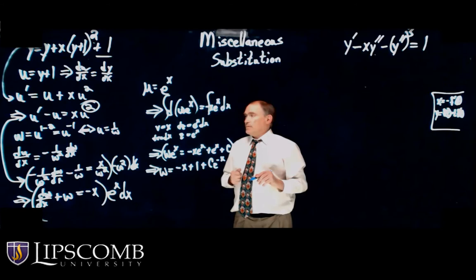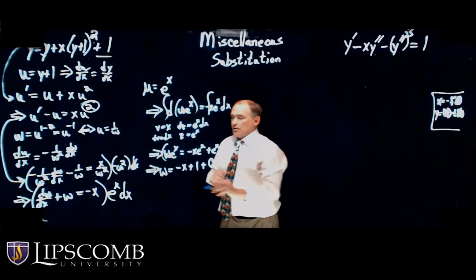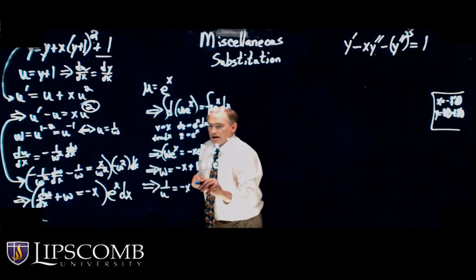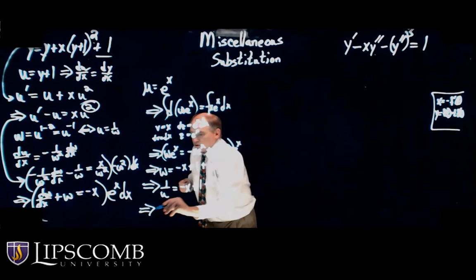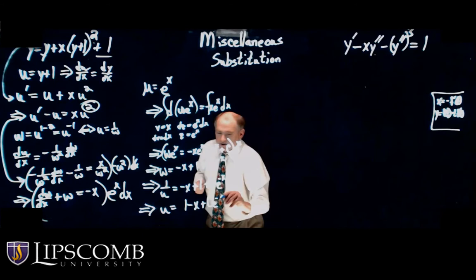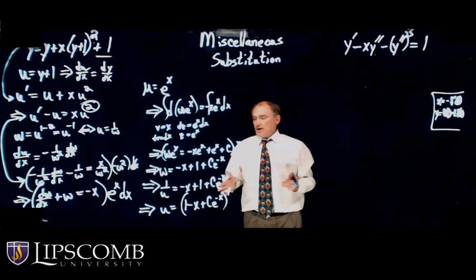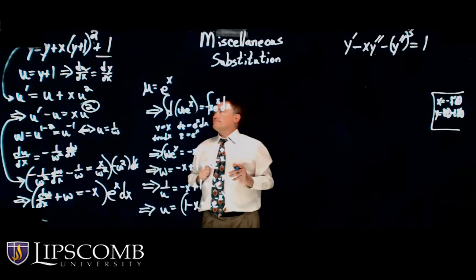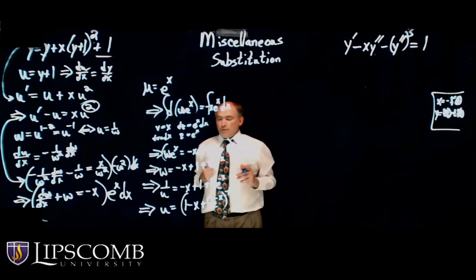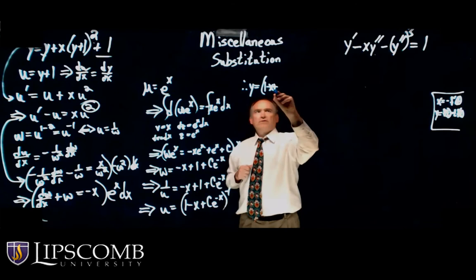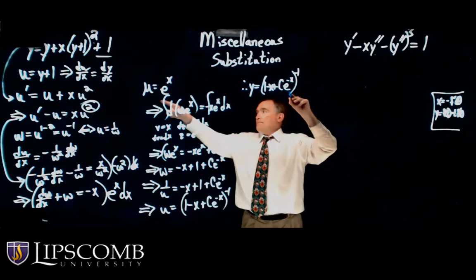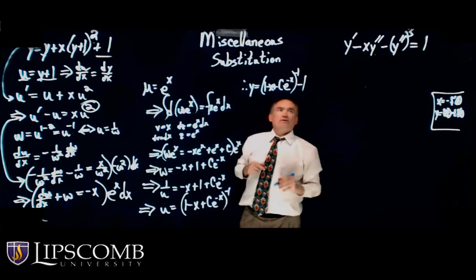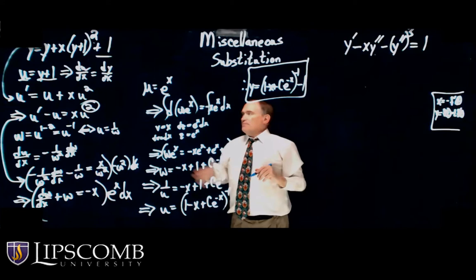So w equals negative x plus 1 plus C times e to the minus x, since I divided everything by e to the x. Now, w is 1 over u, so 1 over u equals negative x plus 1 plus C times e to the minus x. Therefore, u equals (1 minus x plus C times e to the minus x) to the negative 1. Since u equals y plus 1, then y equals u minus 1, giving the final solution.